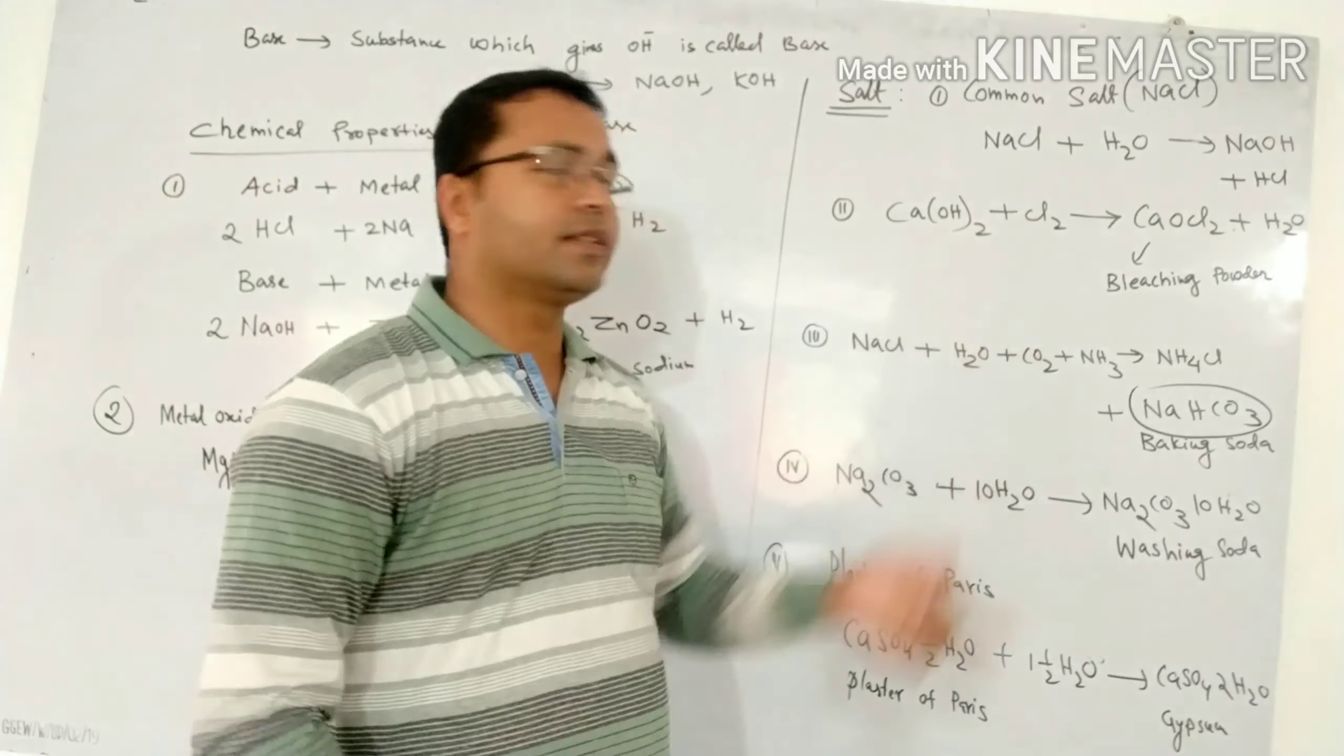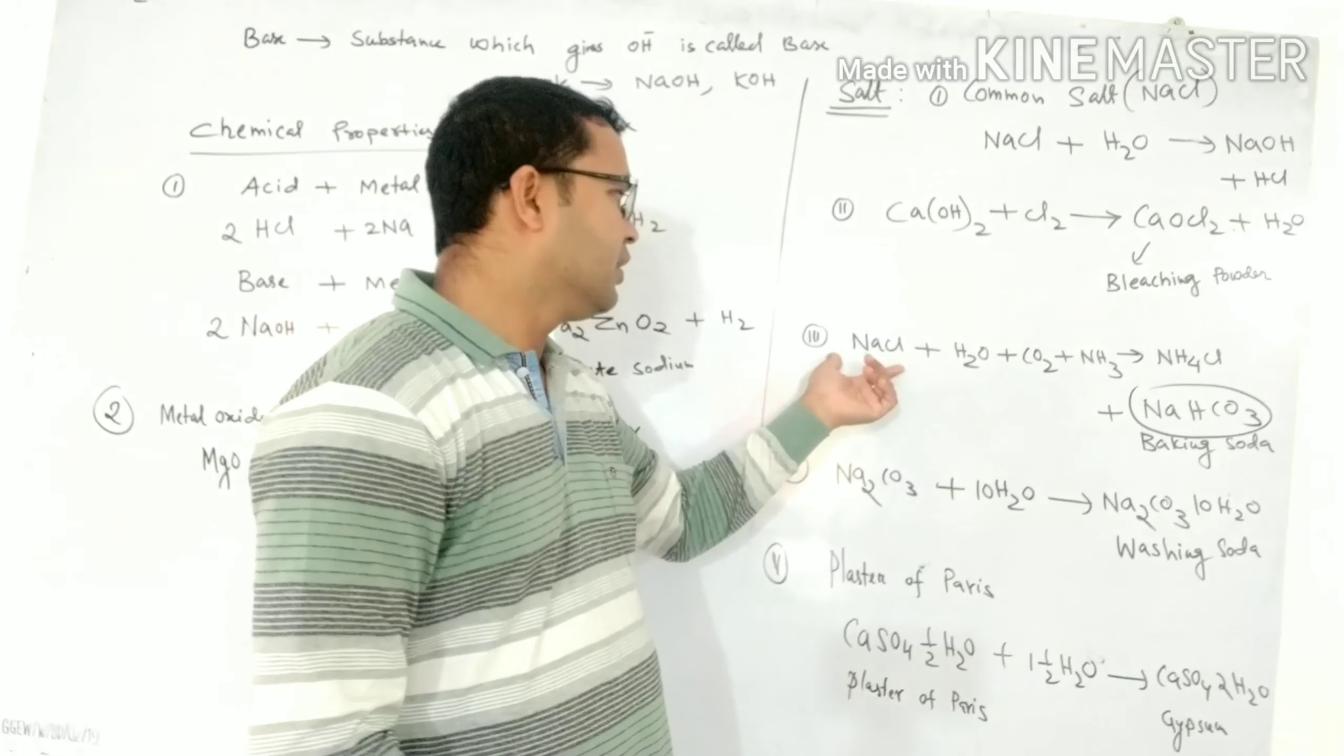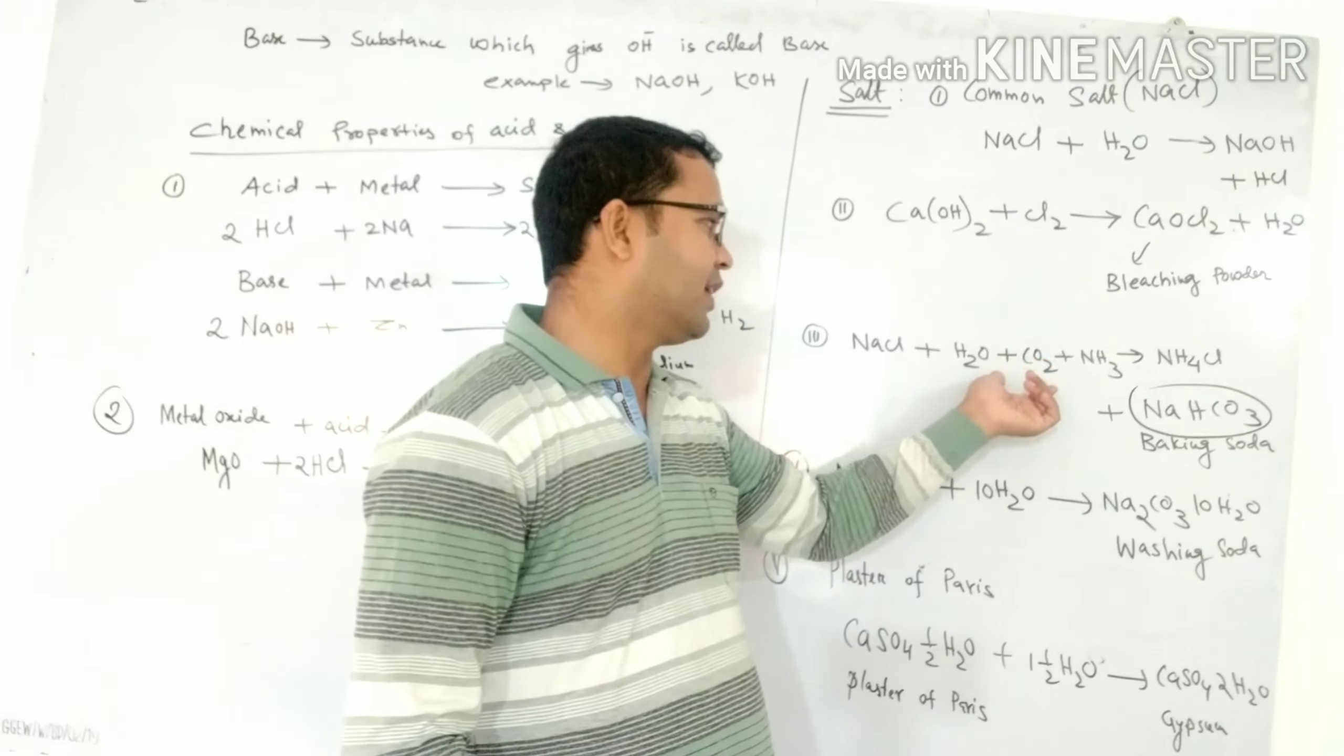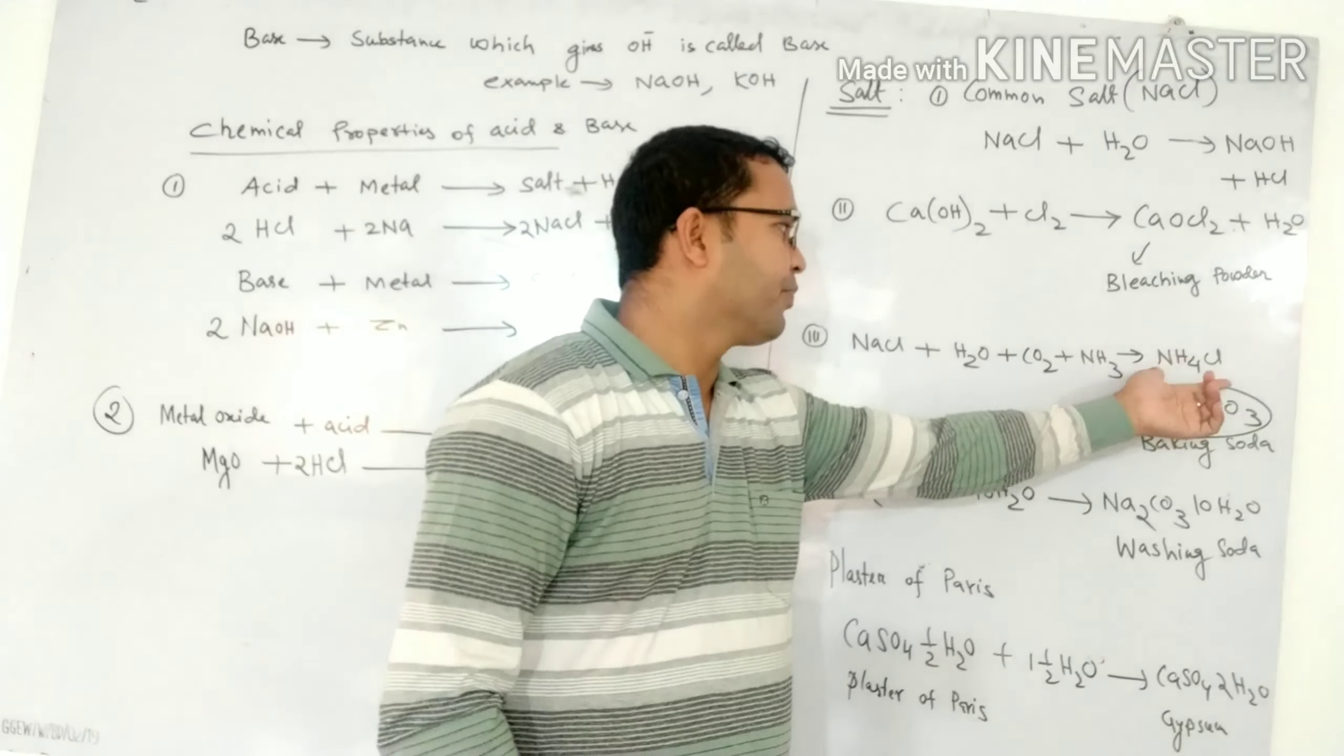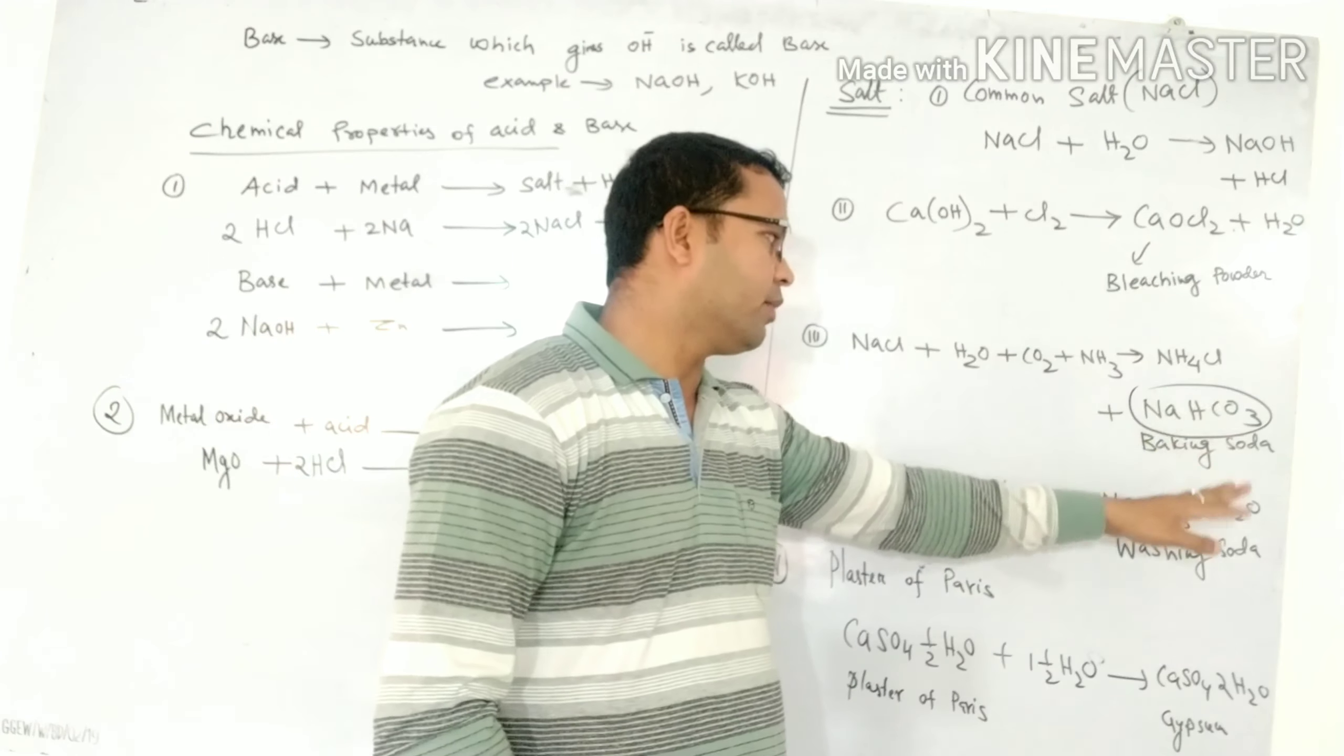Bleaching powder is prepared from slaked lime passing over chlorine gas. Baking soda is manufactured when sodium chloride reacts with water, carbon dioxide gas, and ammonia gives baking soda. And one byproduct is also there, NH4Cl. It is also important in laboratory. So we get two compounds, both are important.